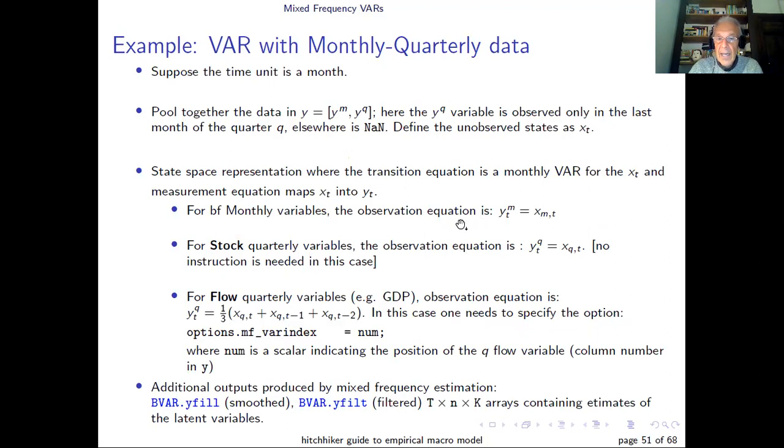The idea is to set up a state space model in which if you have stock variables, the quarterly variables are the last value of the monthly variables. And if you have a flow variable, these are treated as being an average over the quarter. So if you have stock variables, you don't have to do anything, it's automatically done in the toolkit. If you have a flow variable, you have to use the option mixed frequency variant number, which tells you how many averaging of the observations you're going to do. And there are two additional subfields in the BVAR output: Y-fill and Y-filter, which have the smoothed and filtered estimates of the latent variables.